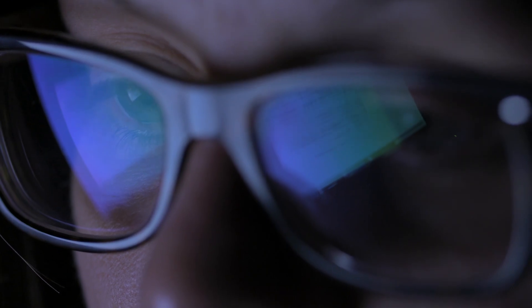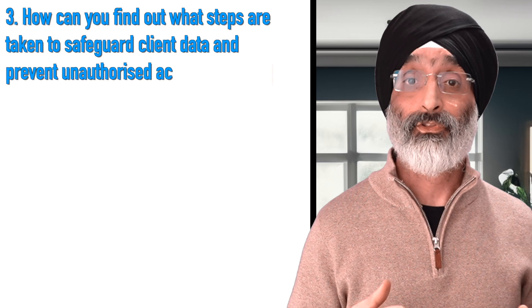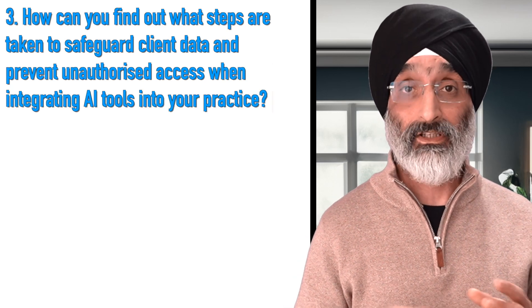When it comes to using any AI system ethically, it's really important to understand what measures are in place to prevent unauthorised access to AI-generated data. This includes preventing vendors who supply and support the AI software from accessing confidential information. The ethical use of AI should always emphasise safeguarding sensitive information to ensure that clients' privacy is always respected — it's about maintaining trust and integrity in the use of technology in our professional practices. How can you find out what steps are taken to safeguard client data and prevent unauthorised access when integrating AI tools into your practice?